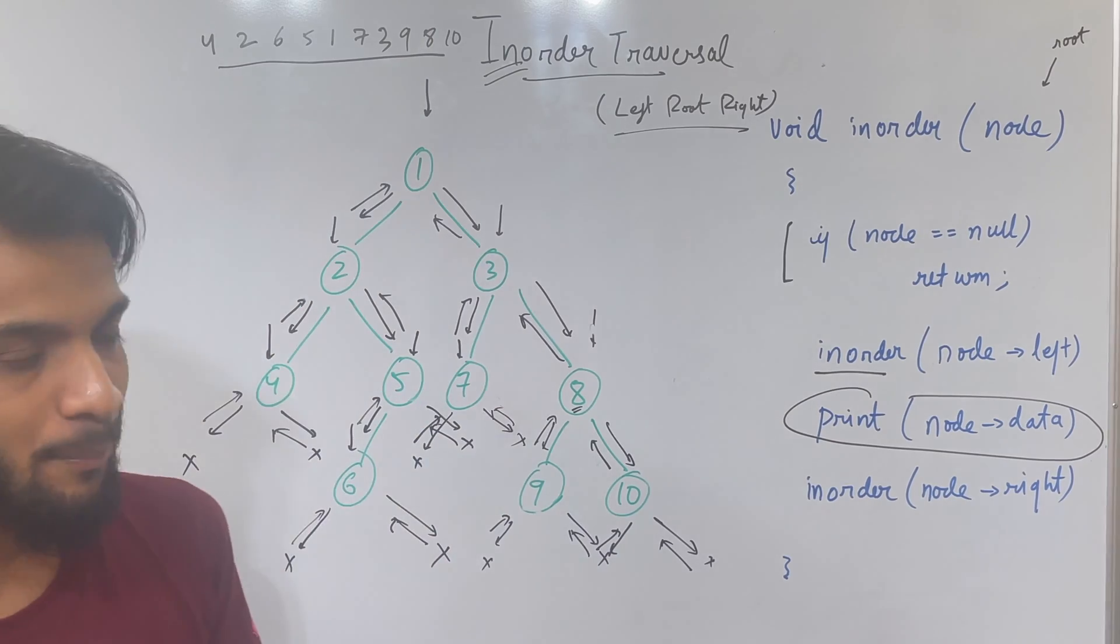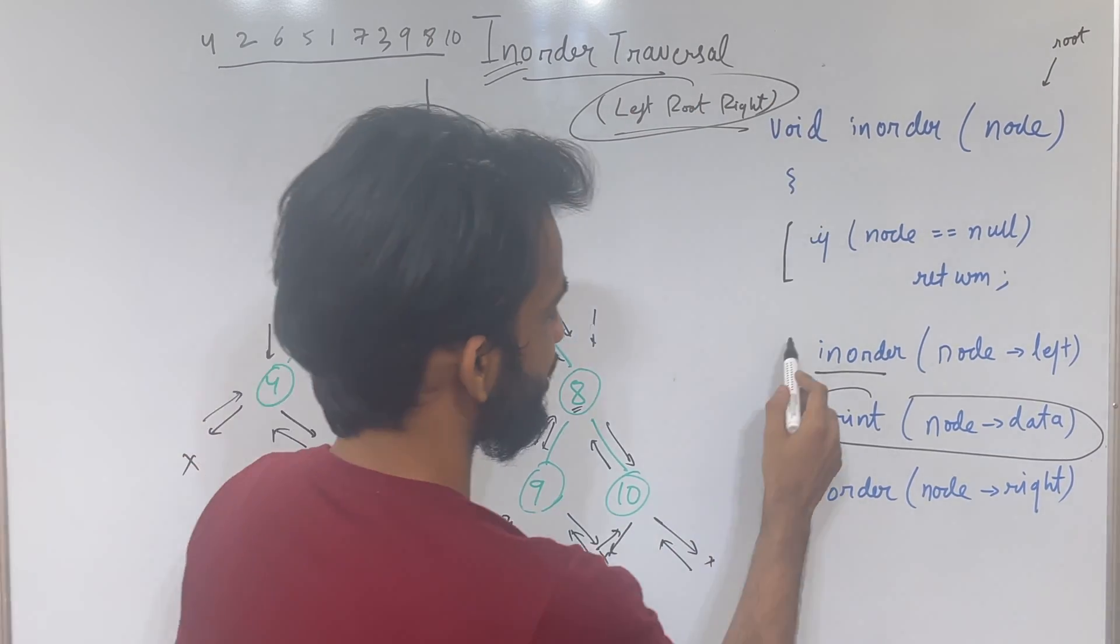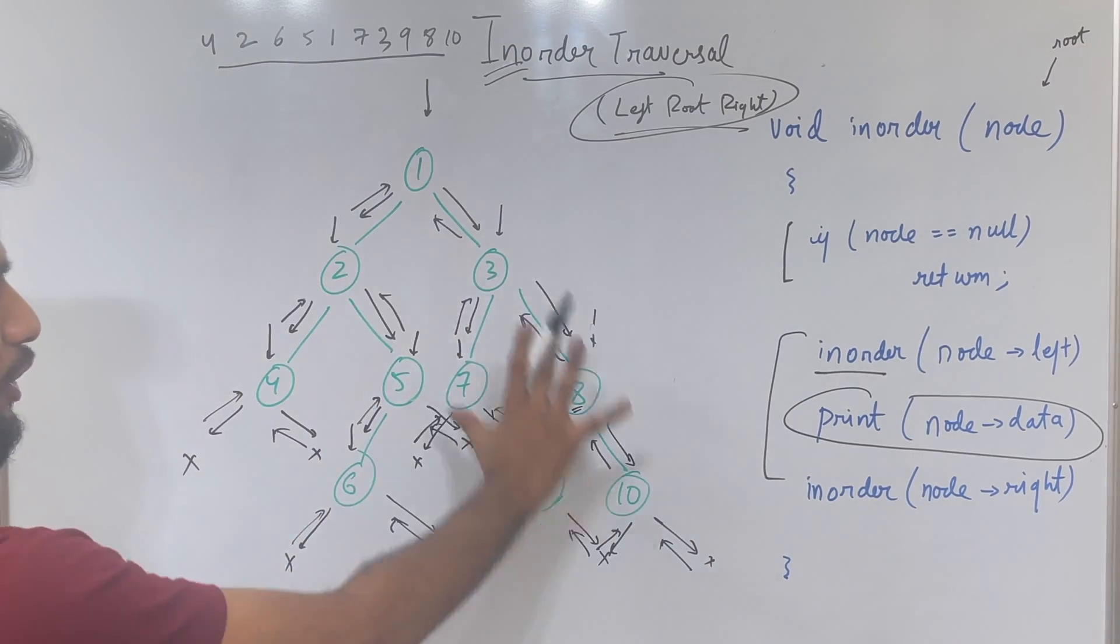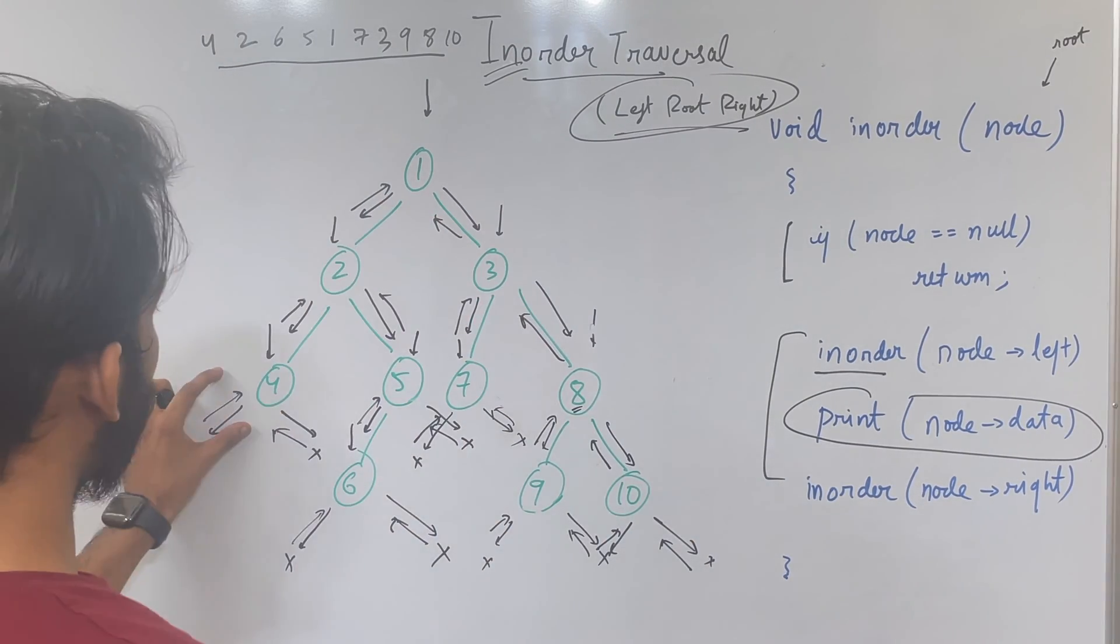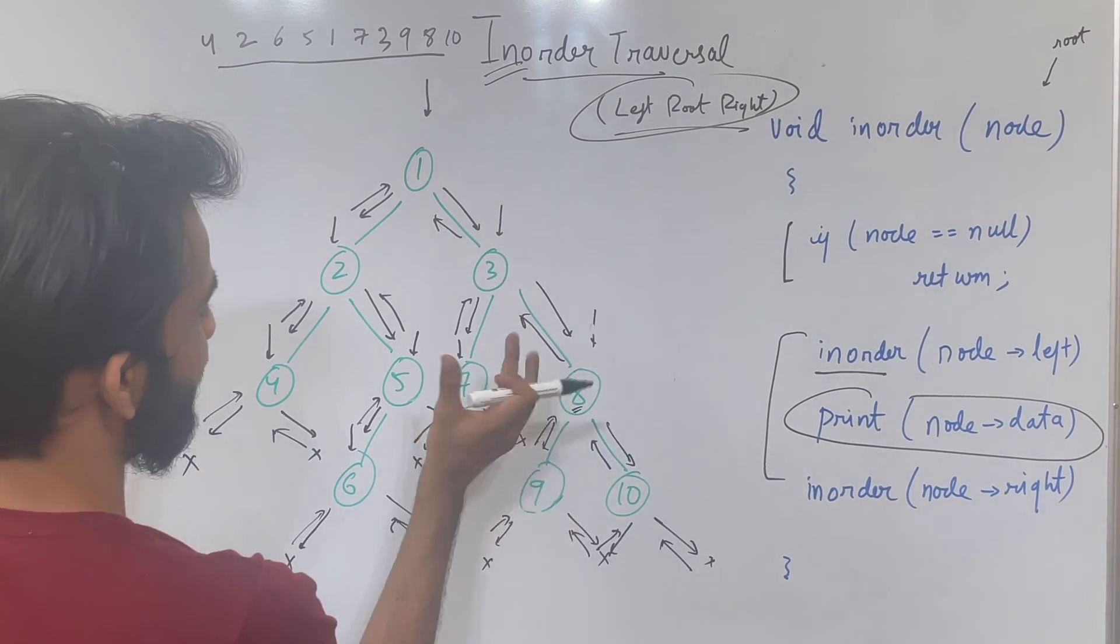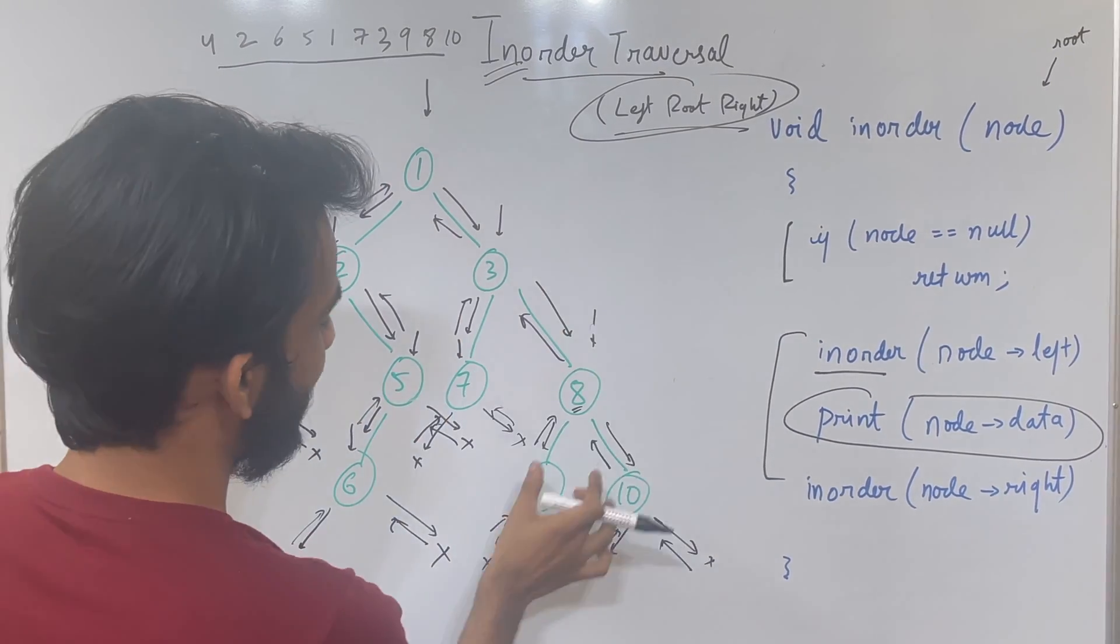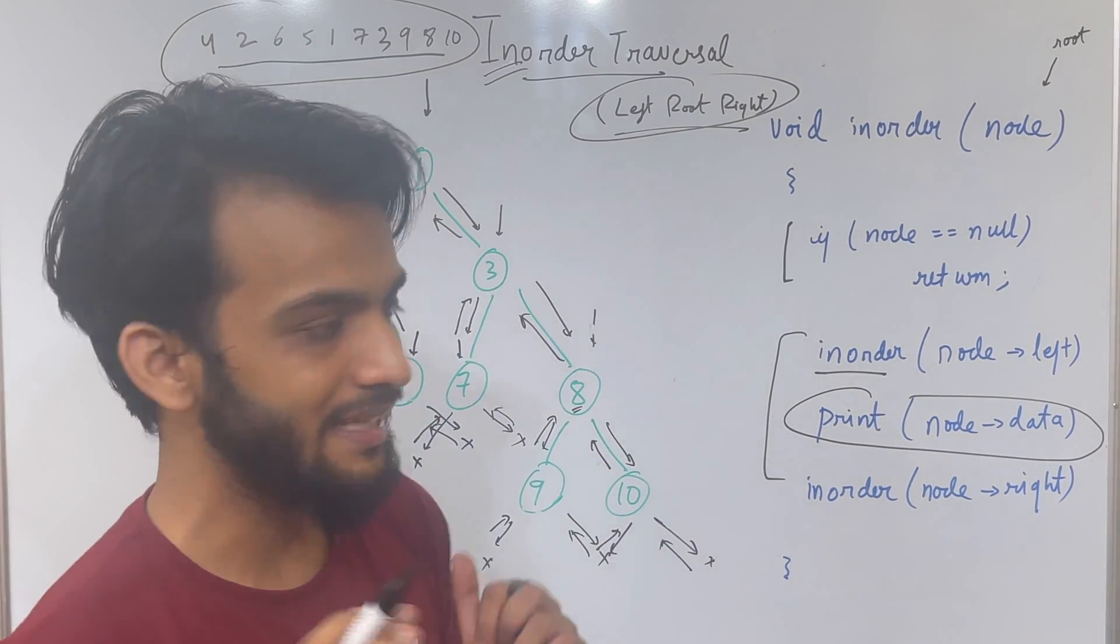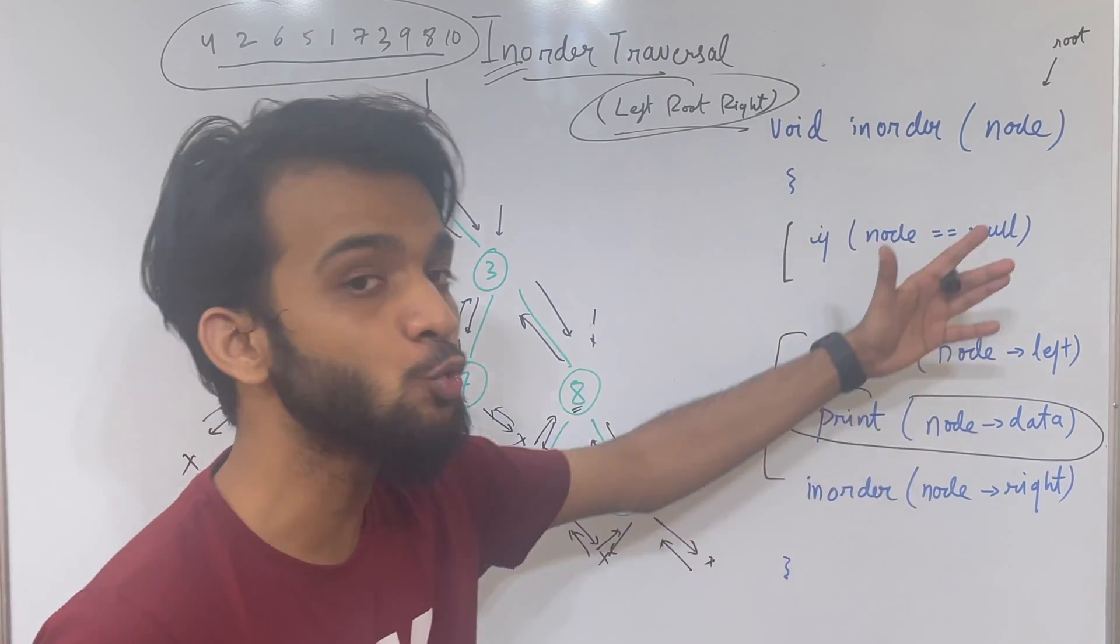So don't complicate things. Whatever is over here, just write them in recursive code. So this is how the recursion will make sure that 4, 2, 6, 5, 1, 7, 3, 9, 8, 10 is printed as the in-order traversal technique. So this was the pseudo code.